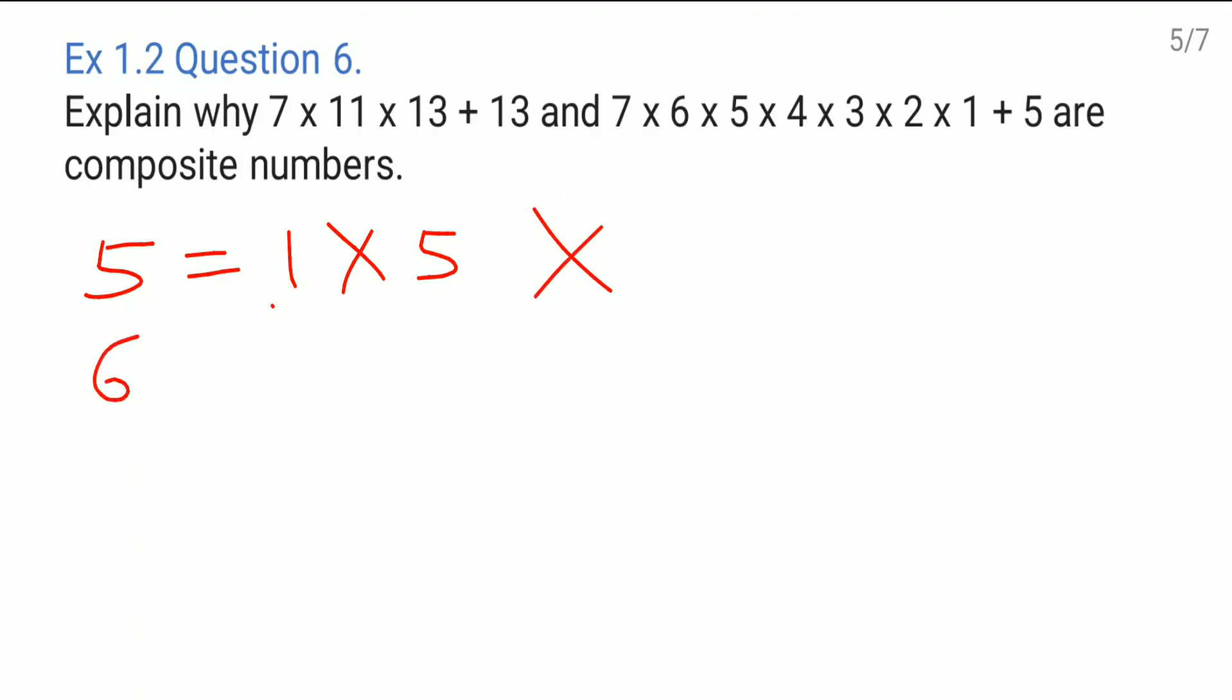But if I write down 6, that means 1 is a factor, then 2 is also a factor, then 3 is also a factor, and 6 is also a factor. See, more than two factors. So it is a composite number.